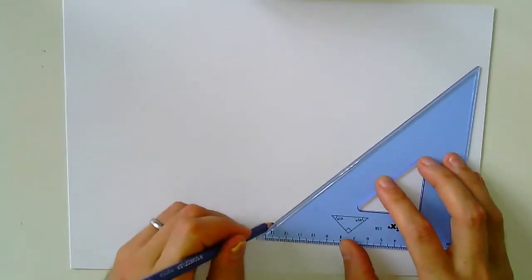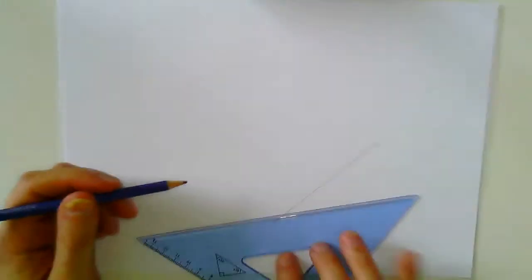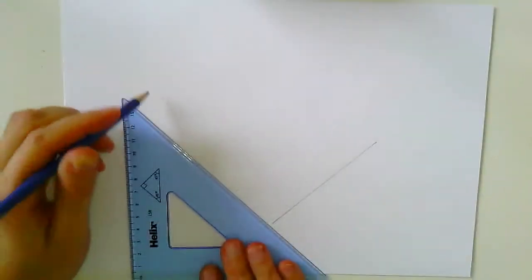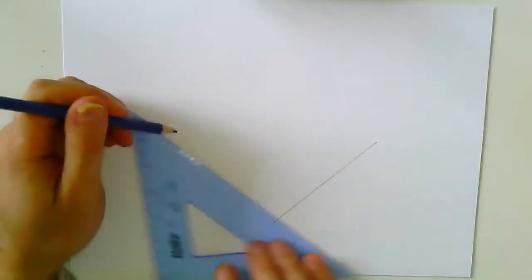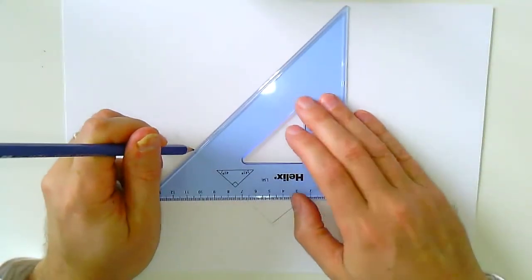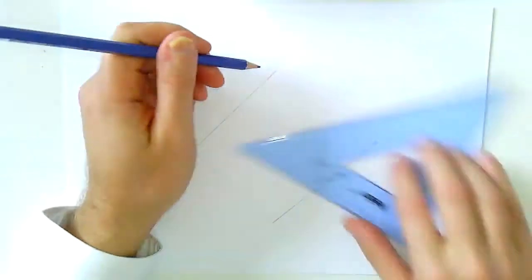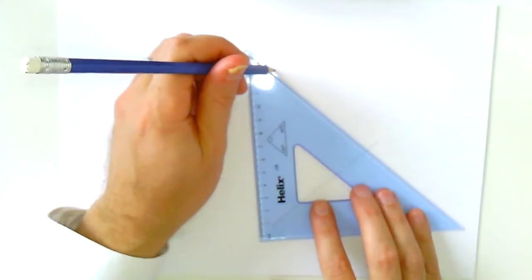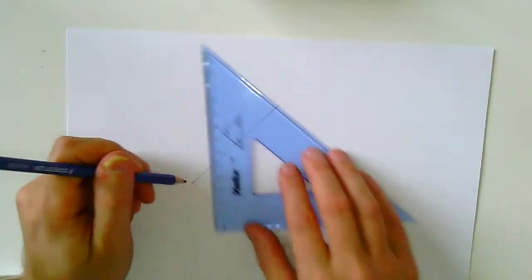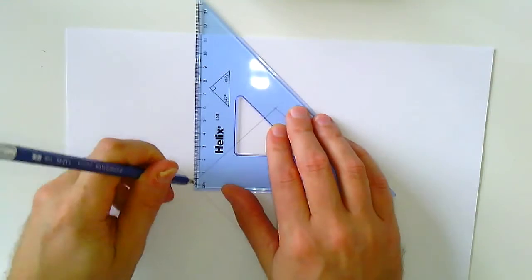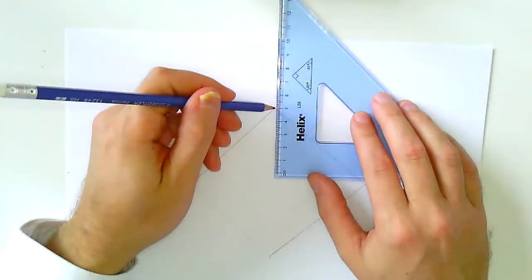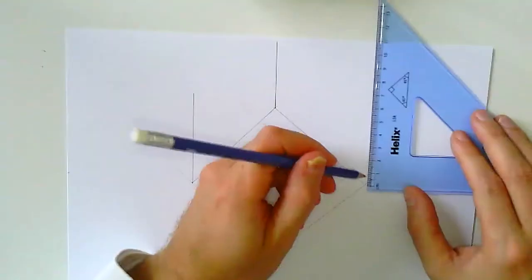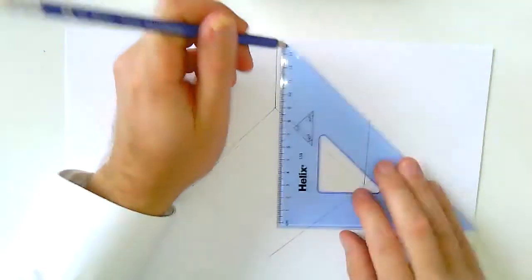I'm going to start off by drawing the base of my plan at 45 degrees. It's up to you how big this is. Once I've got my base, I'm going to come straight up at 90 degrees. I'll come up the same amount for each one - I'm going to come up five centimeters for each one.